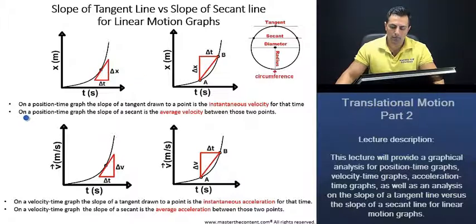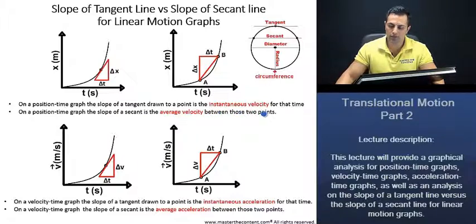On a position time graph, the slope of a secant is the average velocity between those two points. Thus, we can say that the average velocity is going to be between these two points here.